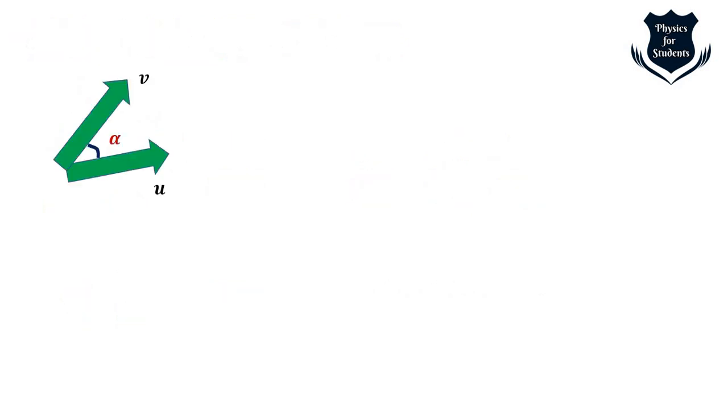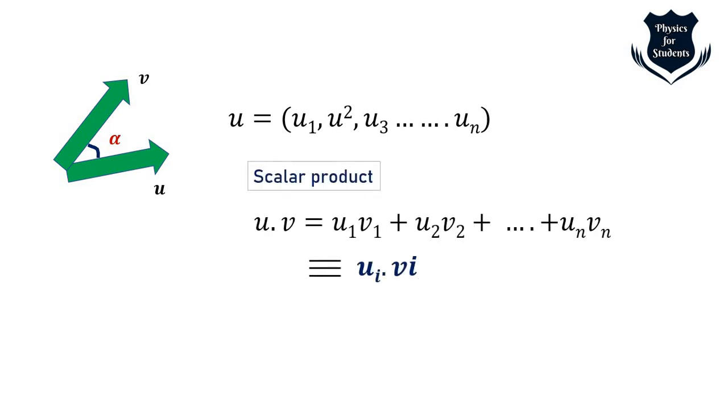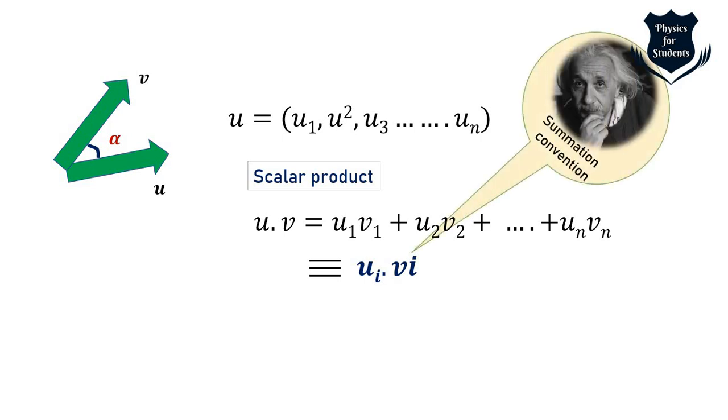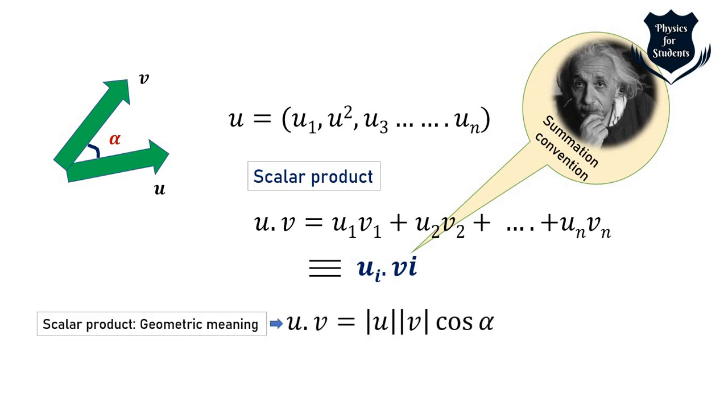Now if I consider for example two vectors u and v in n-dimensional euclidean space and alpha is the angle between them then we can form the inner product something like this and the scalar product like this. Note that I have used u sub i and v sub i because I am using the Einstein summation convention. The geometric meaning of the scalar product is this one which I have taken the magnitude along with the angle between them but alpha is the angle between the two vectors now we can check that the scalar product is actually linear in both so this actually shows that we can check out that the scalar product is linear in both the cases.